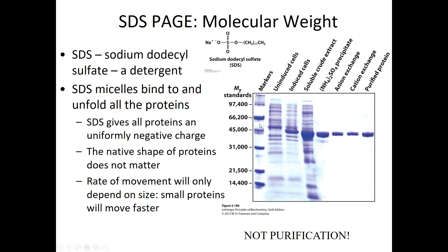In SDS-PAGE you have a marker lane containing purchased proteins of known sizes for comparison. You then run your tissue or cell sample, which contains many proteins. You want to see your lanes go from many bands representing many different proteins, progressively down to a single band representing just your protein of interest — that would indicate a successful purification. If your later lanes are very faint, you've lost a lot of your protein along the way.